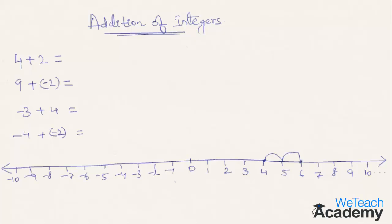The first example is 4 plus 2, wherein you need to mark 4, move towards the right two steps, and wherever you stop is the answer of this addition. The answer is 6.